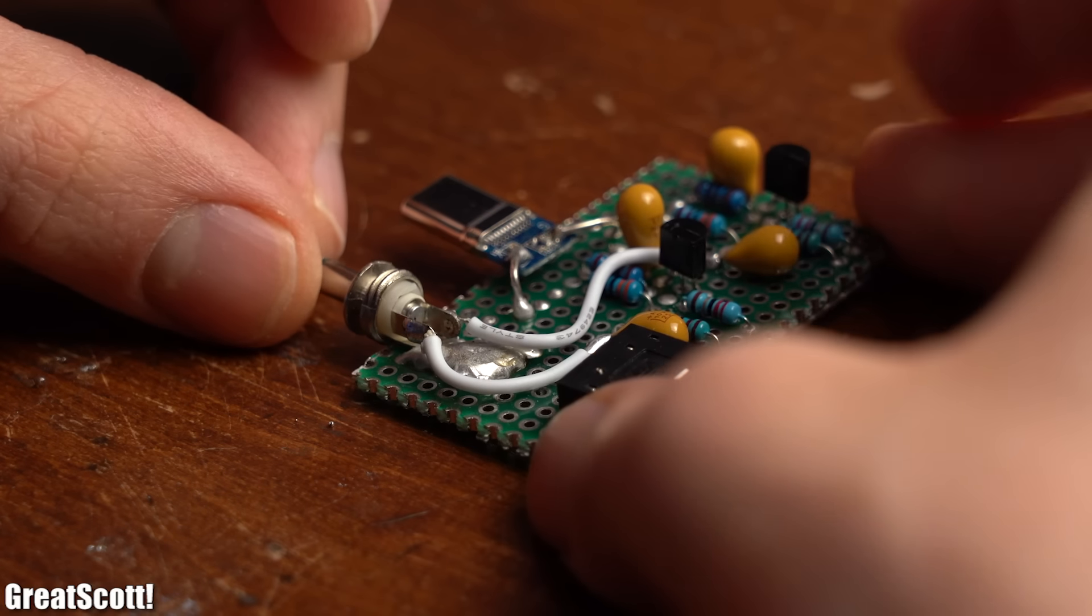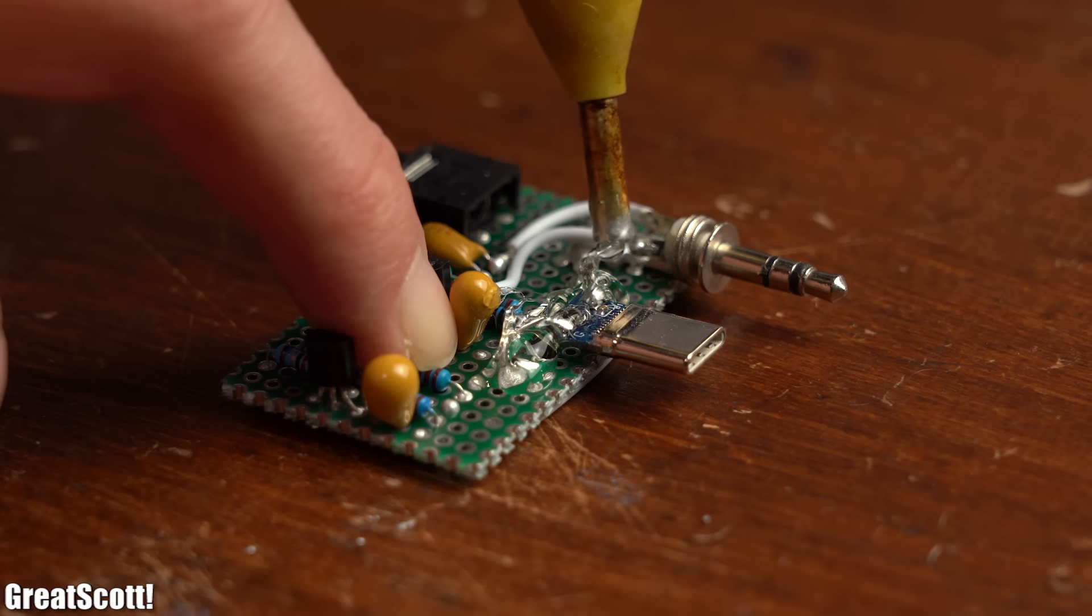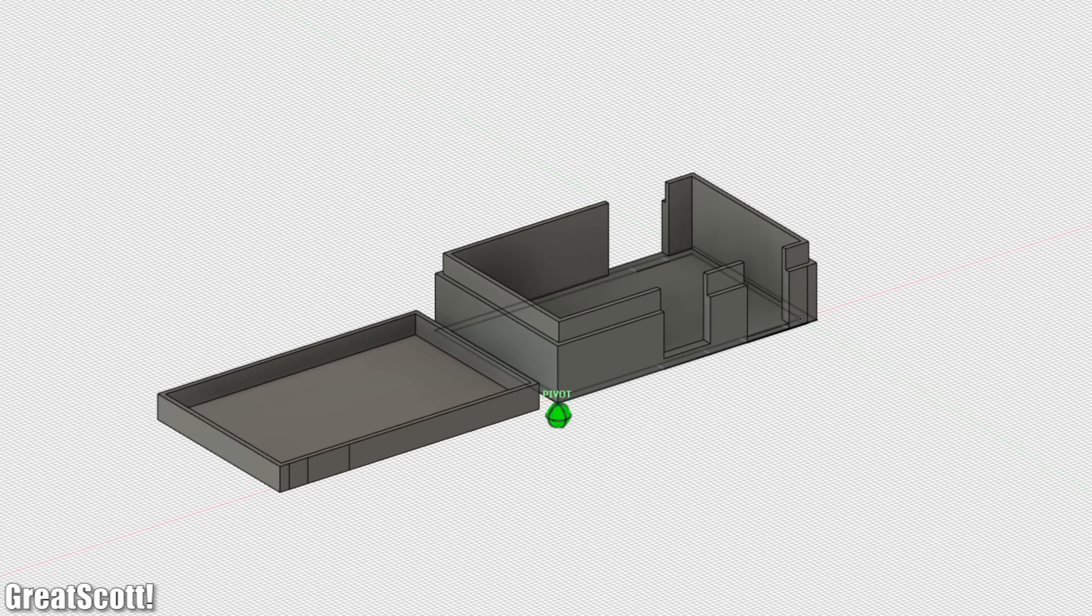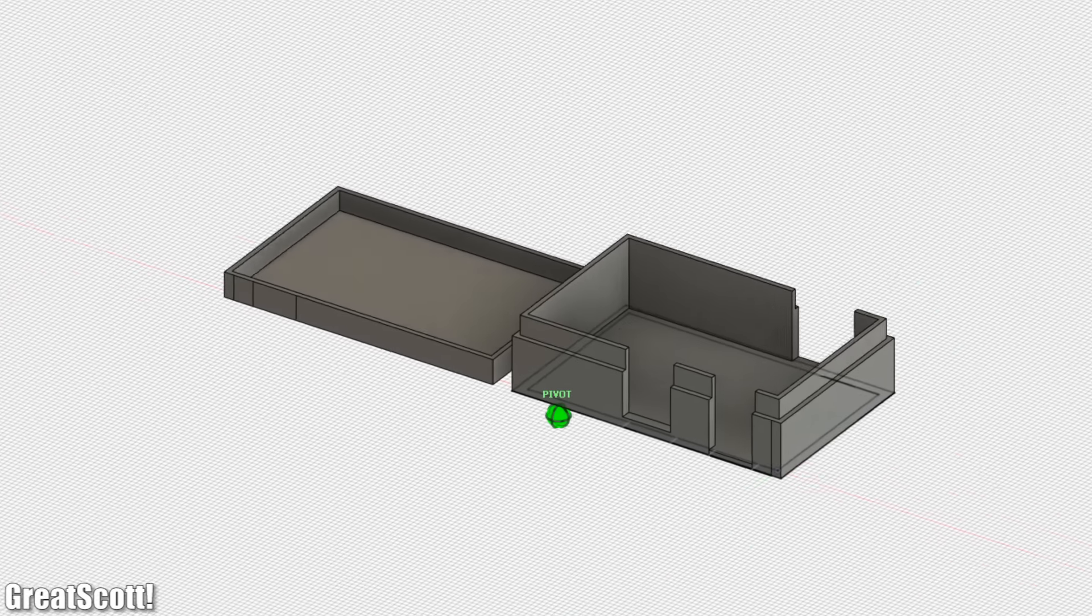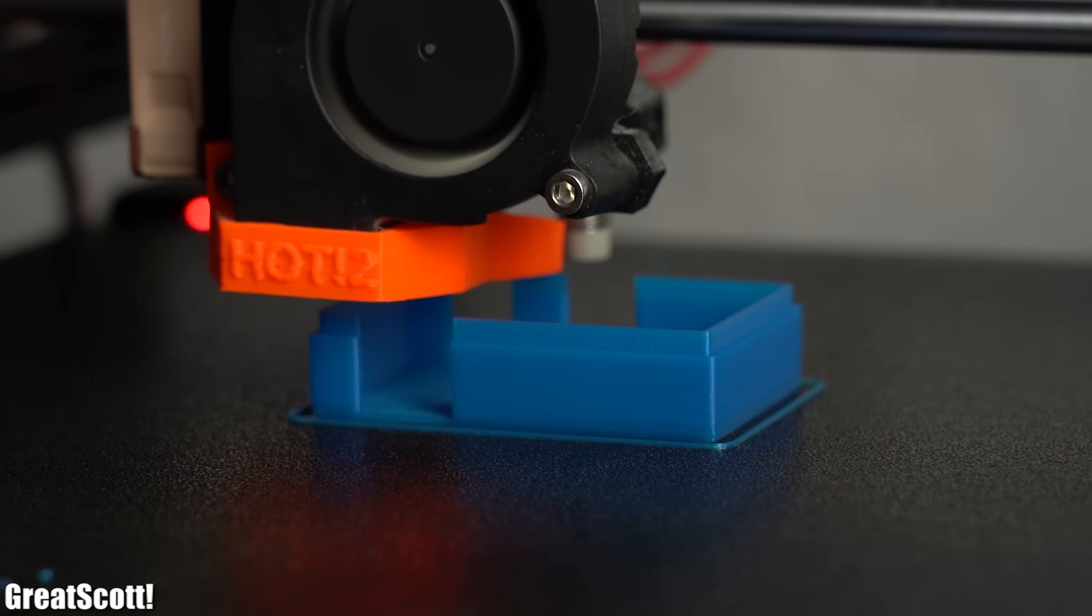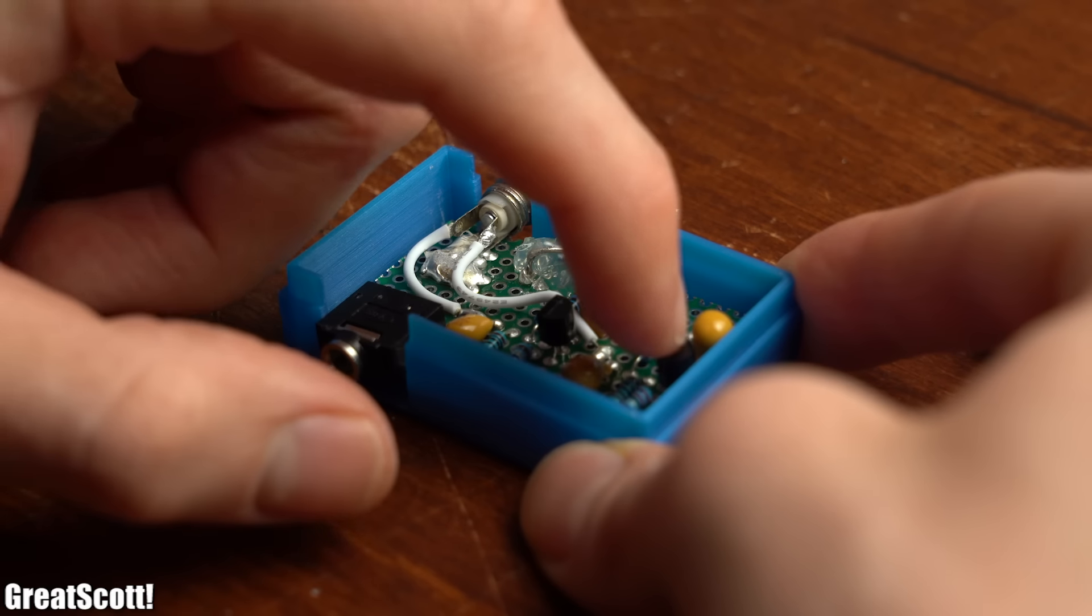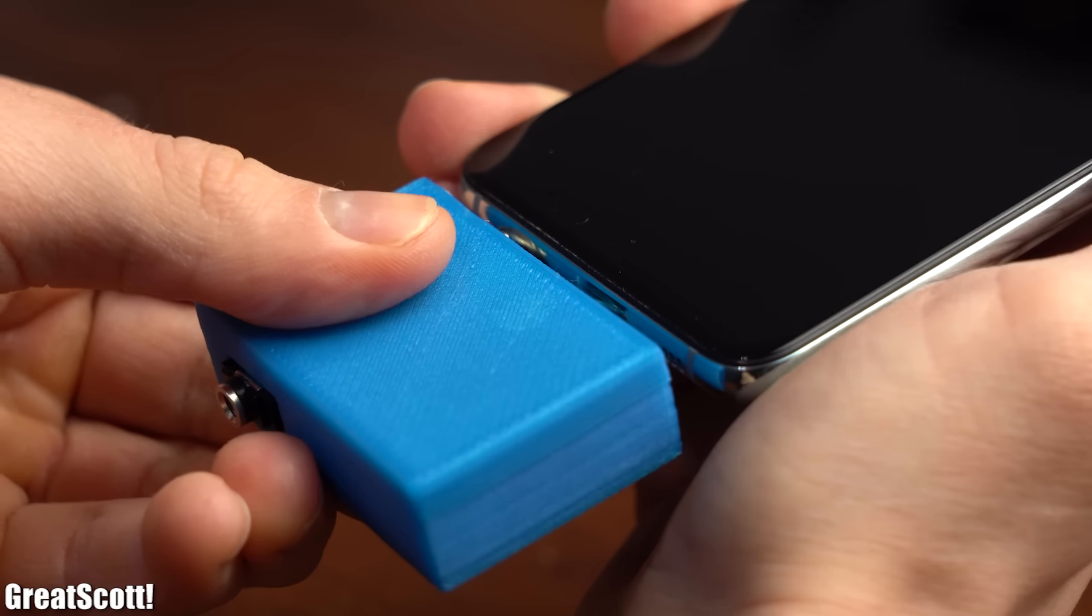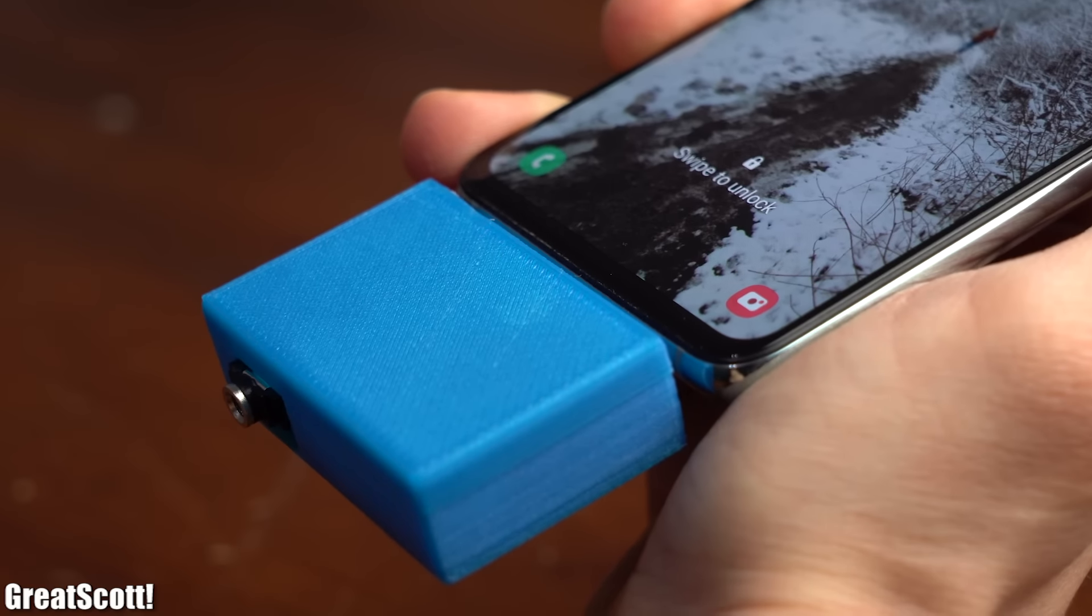After the soldering process was complete, I added a bit of hot glue for stability, designed a fitting enclosure for the project in Fusion 360, 3D printed it with my Prusa 3D printer, and added the housing to the circuit. And just like that, you can make your own class A audio amp for your phone.